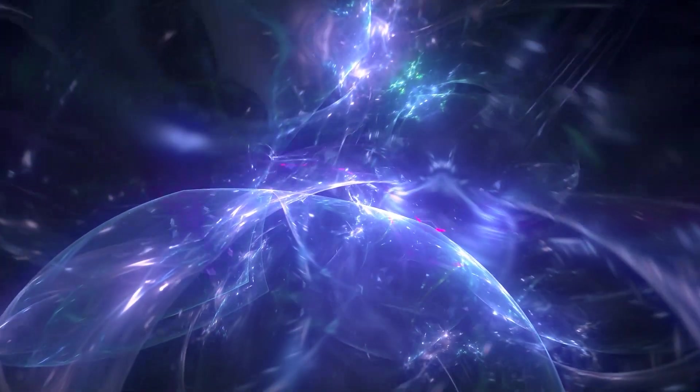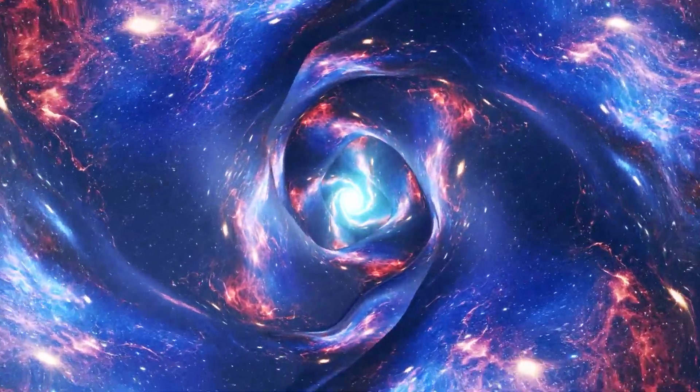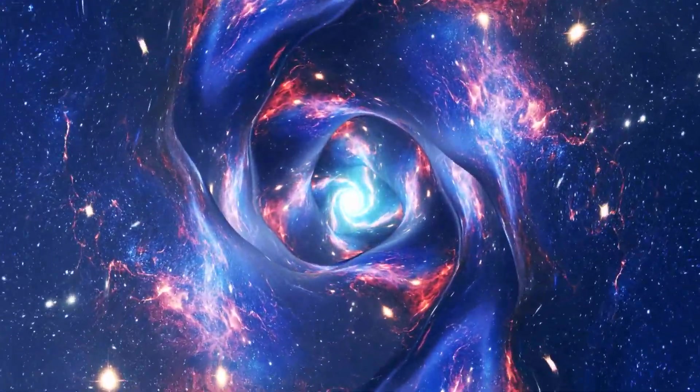Dark matter plays a big role in the universe's structure and evolution. This gravitational pull helps galaxies form and holds them together. Without dark matter, galaxies would just fly apart because of their rotational speeds.